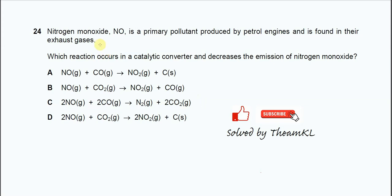Question 24. Nitrogen monoxide is a primary pollutant produced by petrol engines and is found in their exhaust gases. Which reaction occurs in the catalytic converter and decreases the emission of nitrogen monoxide?